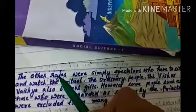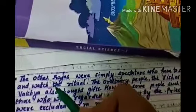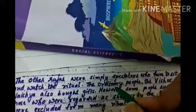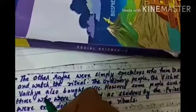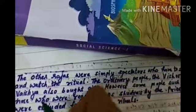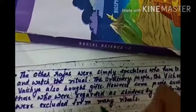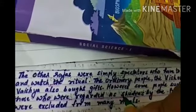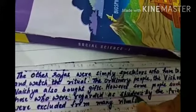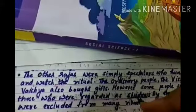The ordinary people — the Vish or the Vaishya — also brought gifts to watch the ritual. However, some people such as those who were regarded as Shudras by the priests were excluded from many rituals. The lower caste people who were called Shudras were not allowed to come, because they were known as the lower caste.